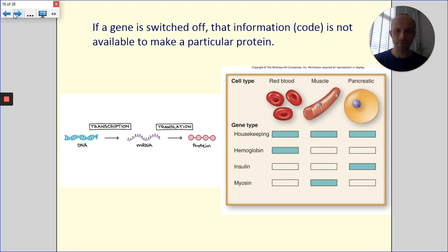So DNA, mRNA, protein, the link from National 5. So if a particular gene is switched off, well, that information isn't available to make a particular protein within that cell.